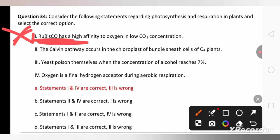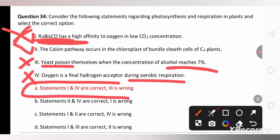The Calvin pathway occurs in chloroplast of the bundle sheath cells in C4 plants is the right one. Oxygen is a final hydrogen acceptor during aerobic respiration. This is also wrong statement. So this option A is the right answer for this question. This is related to aerobic and anaerobic respiration.